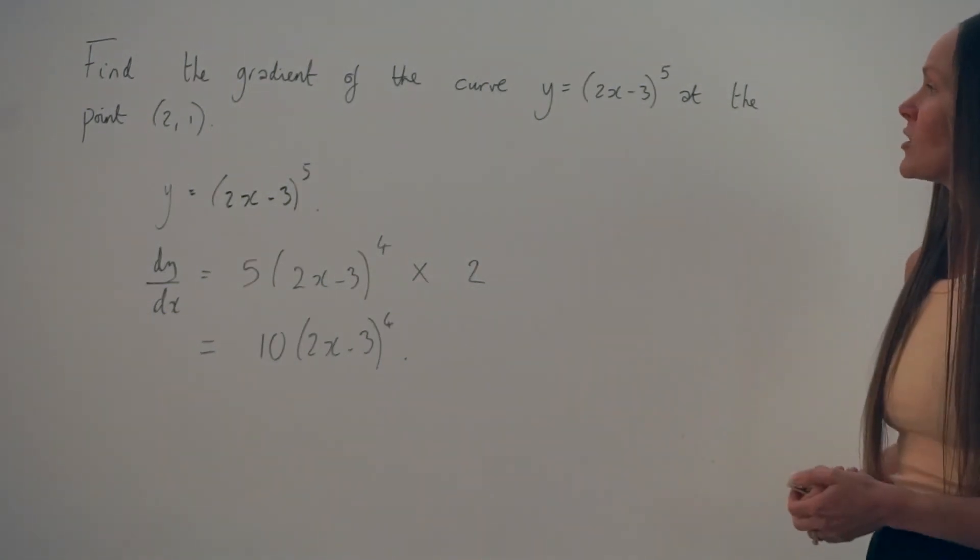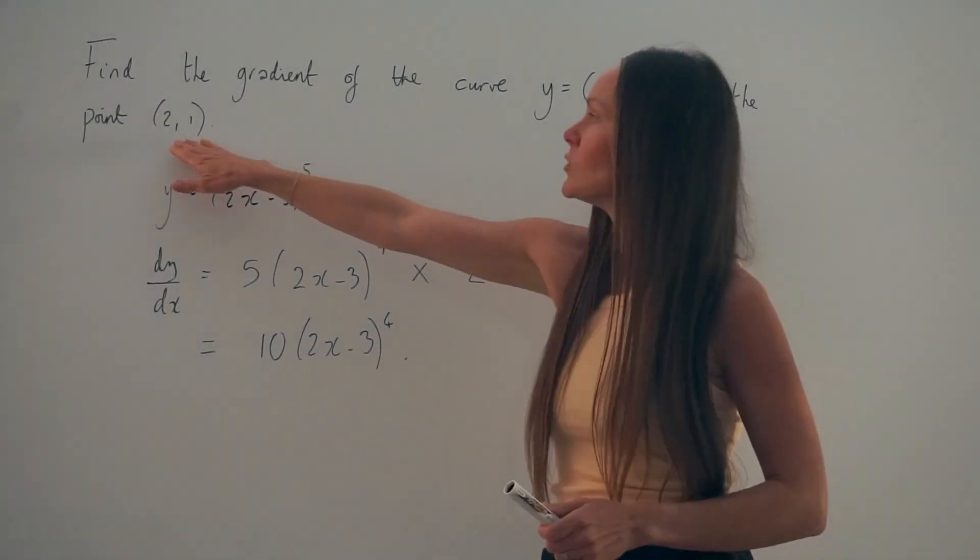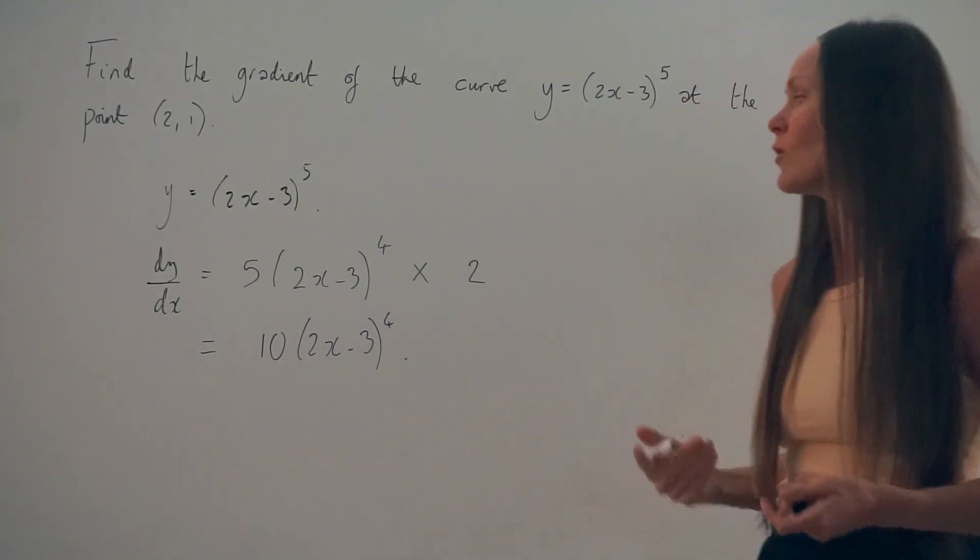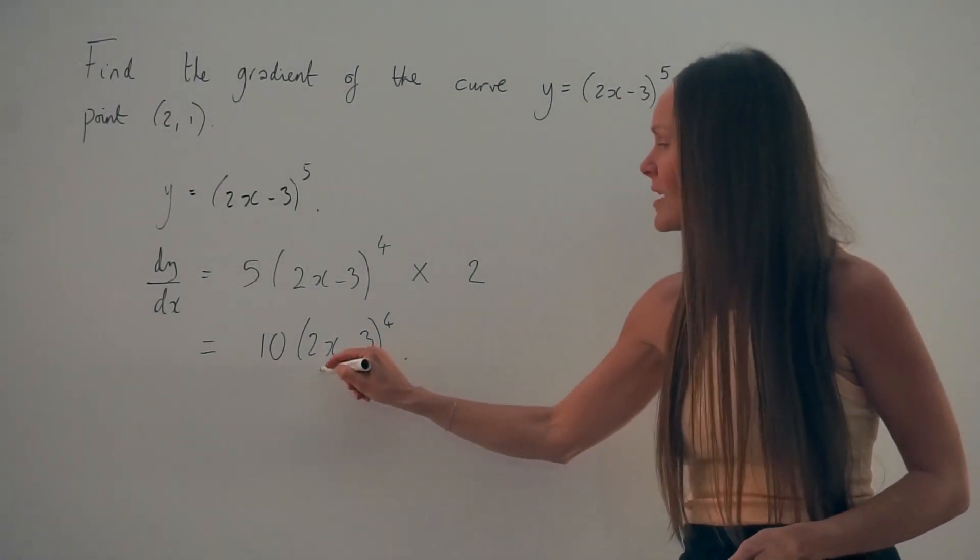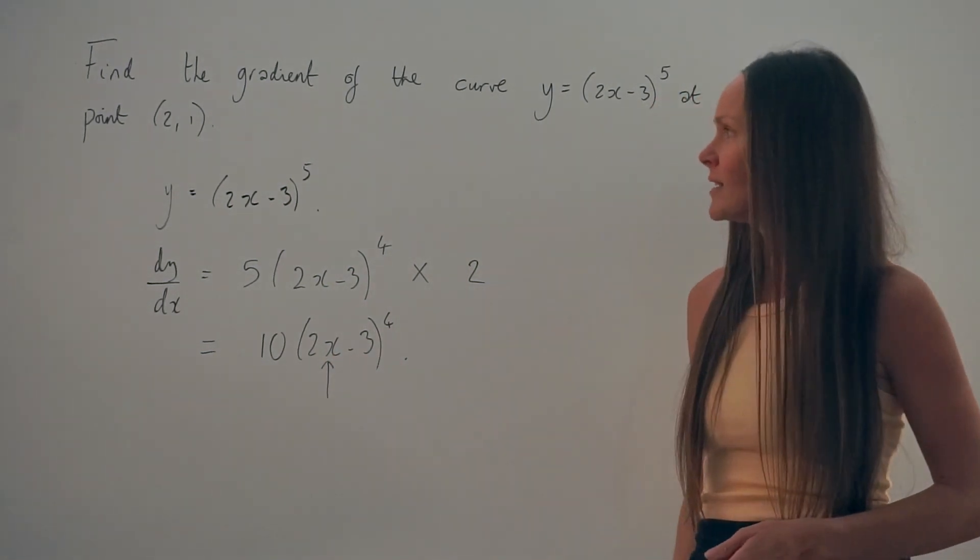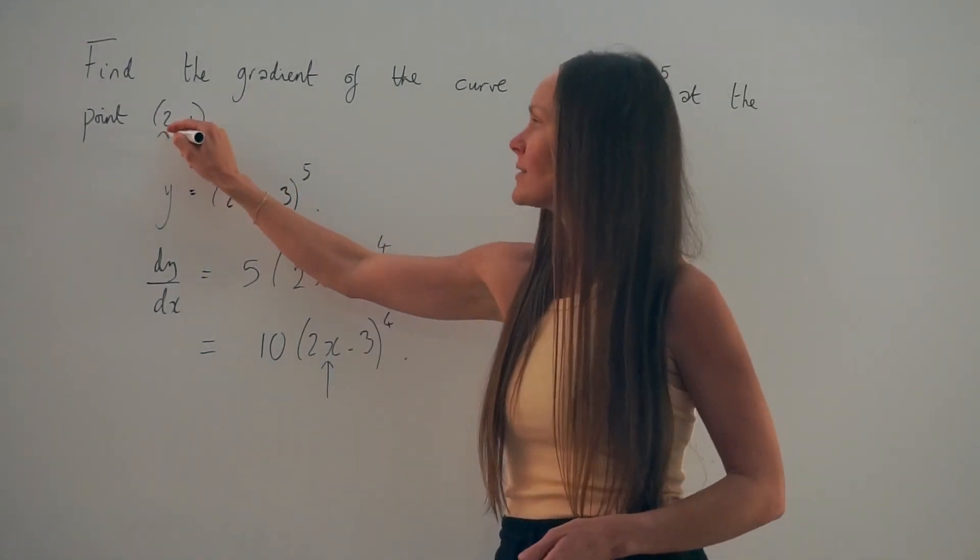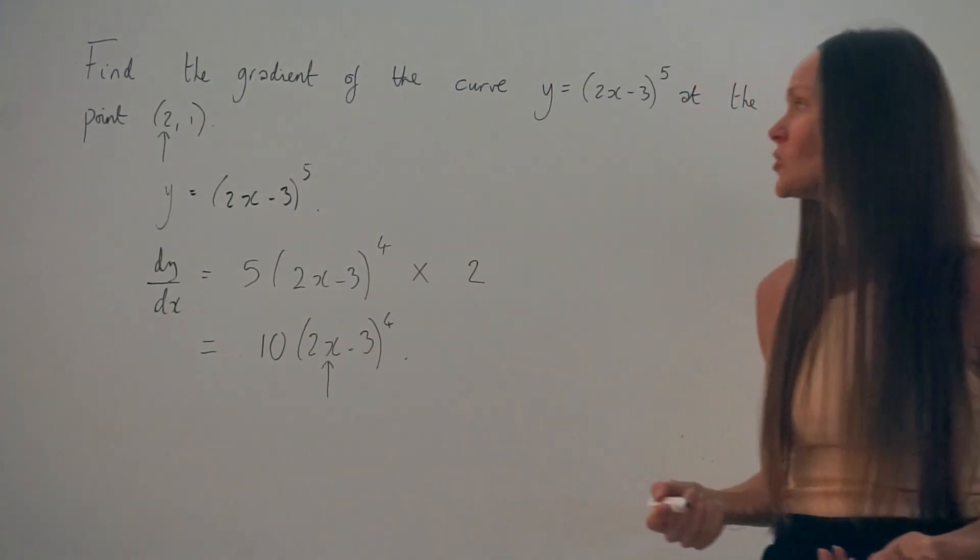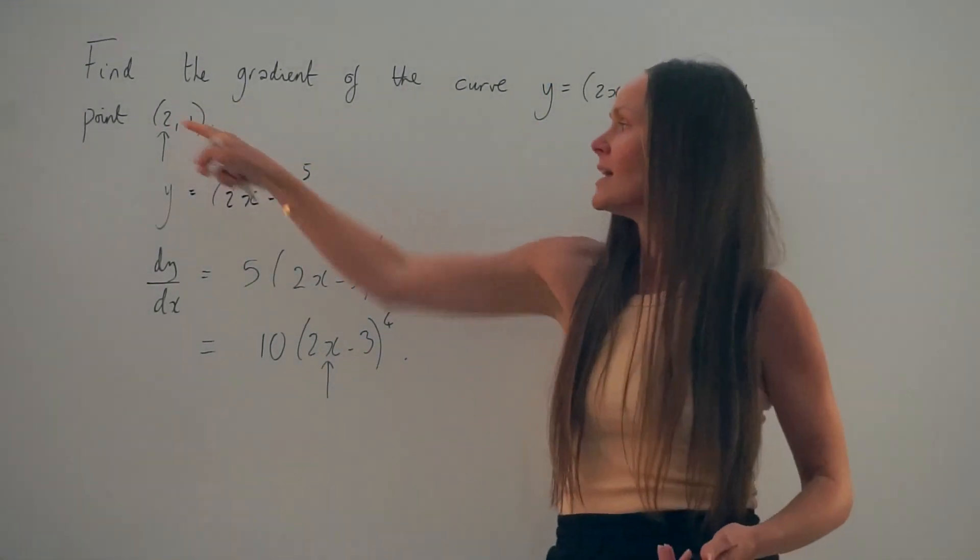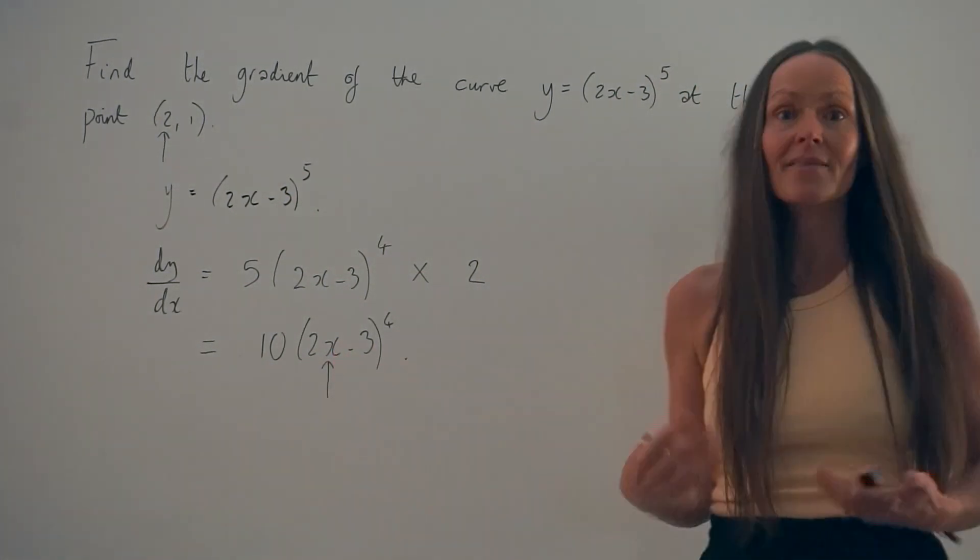But in the question, they give us a specific point, (2, 1), and we have to work out the gradient at this point on the curve. So notice, in our expression for the gradient, there's a value of x here, and we have the value of x here, it's 2. So what you have to do next is substitute positive 2 into the expression here, and then calculate.